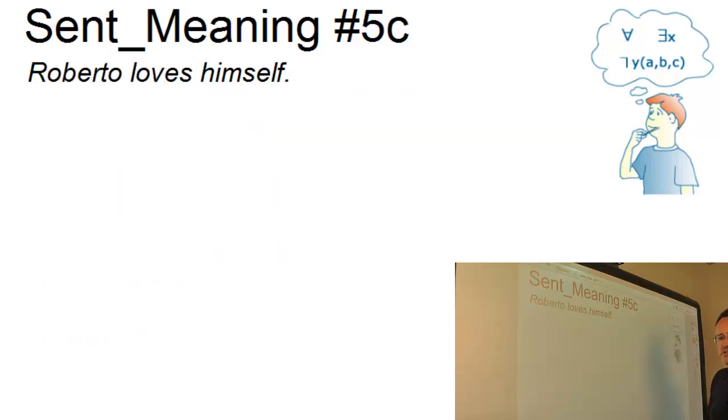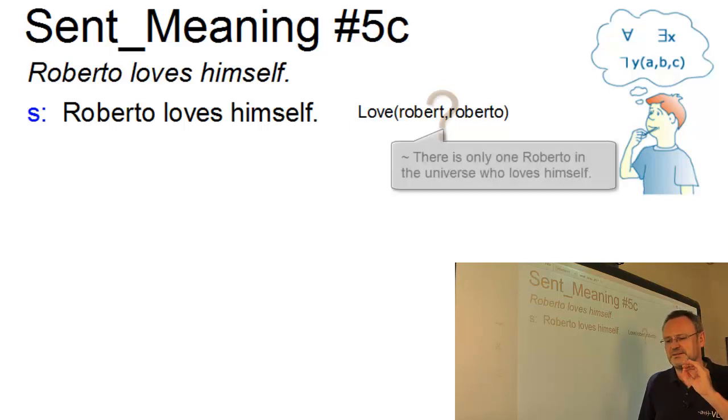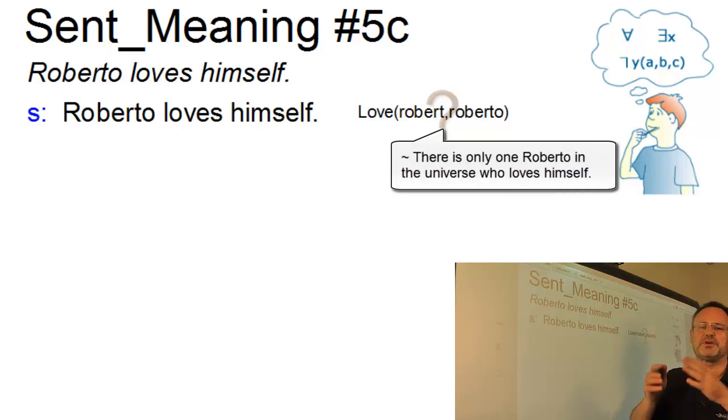And our last example, which can be converted into a single proposition, Roberto loves himself, is tricky. A simple solution would be this. Love, Roberto, Roberto. Roberto loves himself. However, this very simple solution implies that there is only one Roberto in the universe who loves himself.